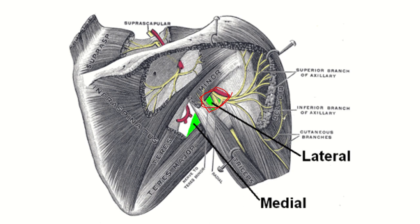First, let's see the boundaries of the quadrangular space. The upper part is bounded by the teres minor muscle, and the lower part is formed by the teres major muscle. So above there is teres minor and below is teres major — the major always supports the minor.